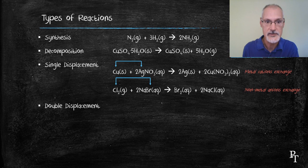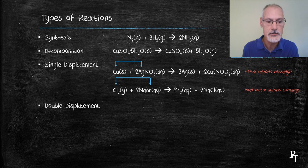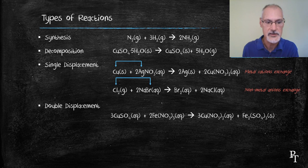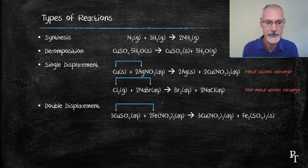In double displacement reactions, we start out with essentially two compounds on each side of the equation. And in a similar fashion, we have an exchange of metal ions that take place.